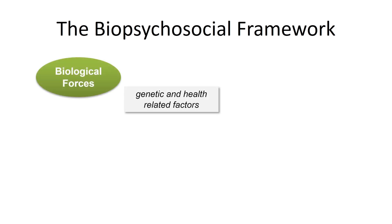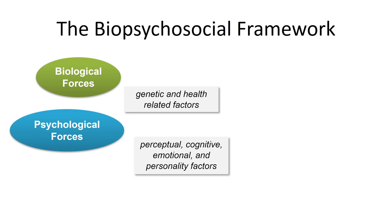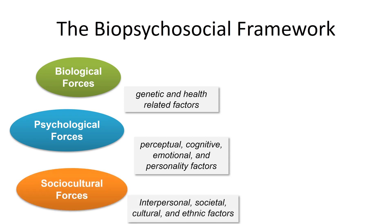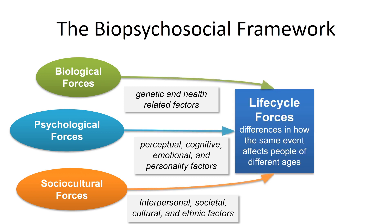The three domains are: biology — like your genetics, your health, and related biological forces; psychology — so that would be things like your perception, your thinking, your emotions, and personality; and your social and cultural forces — like your friendships, your relationships, and your family. All these things combined help to shape you as a person. They combine into what we call the life cycle forces — those differences in how the same event affects people of various ages, ethnicities, and cultures.